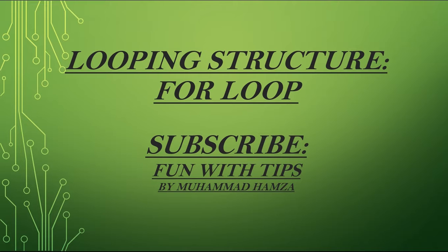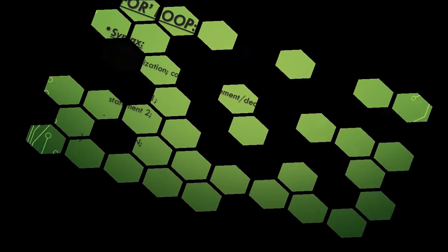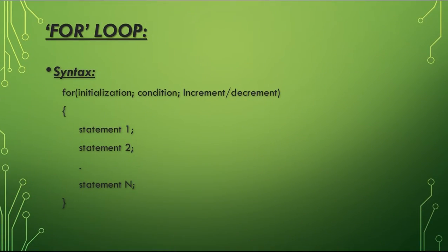Here is the syntax of the for loop. 'for' is a keyword, and between the two small braces, initialization, condition, and increment/decrement are written. Between the two curly braces, statements or a number of statements are written. The initialization specifies the starting value of a counter variable; one or many variables can be initialized in this part.